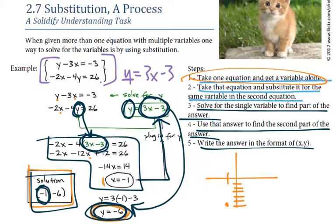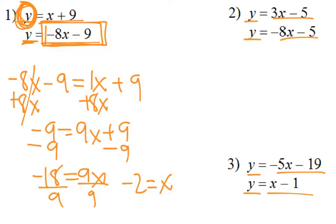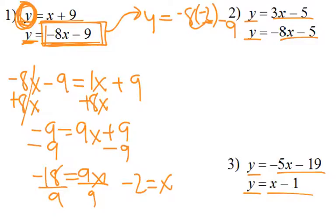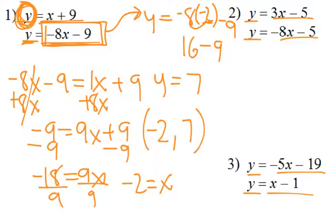There's half my answer — that was steps 1, 2, and 3. Then I take this other equation and say, I now know that x equals negative 2. So I plug in negative 2: negative 8 times negative 2 is positive 16, subtract 9, and we get 7 for y. There's my second half. So I know my answer is negative 2, positive 7. That's where they intercept.